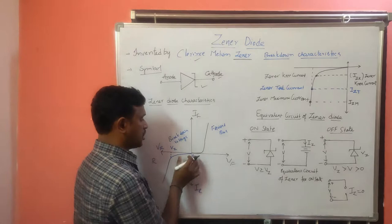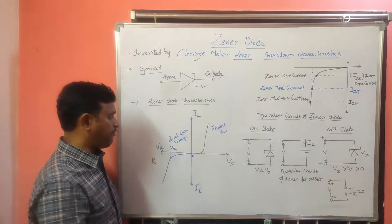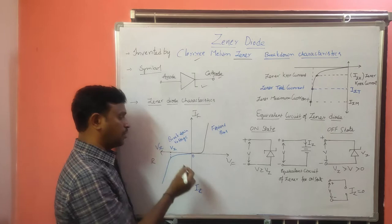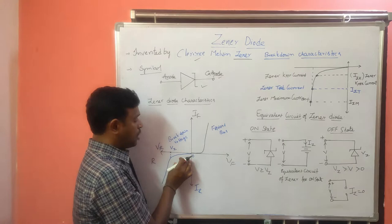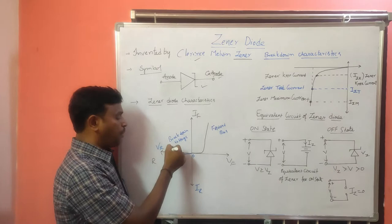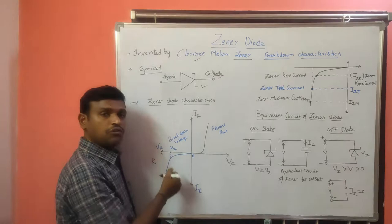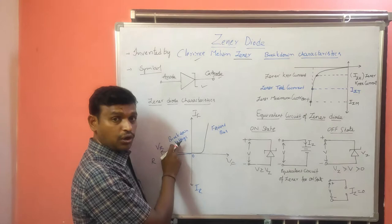This gives the GINA diode characteristics. In the reverse bias characteristics, at a certain point the junction breakdown will appear. Up to that point, it is the normal reverse saturation current. Then suddenly the current will sharply rise because of junction breakdown. This is called the breakdown voltage or GINA breakdown voltage, that is VZ.